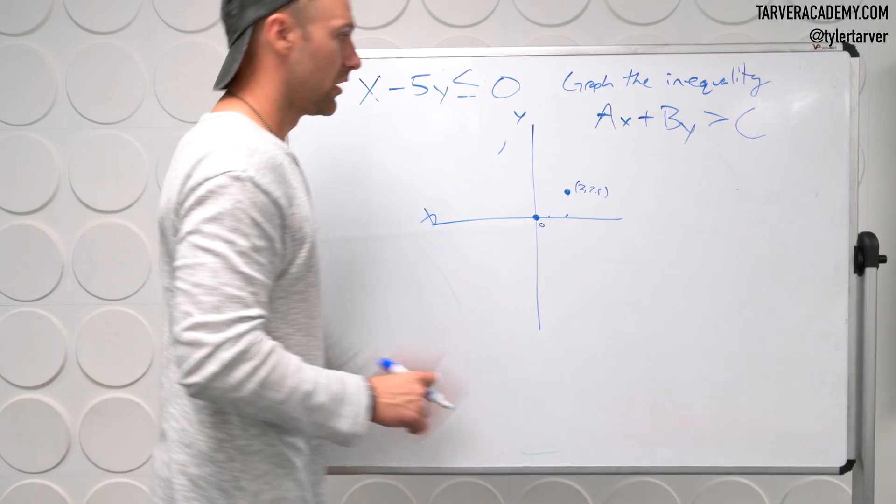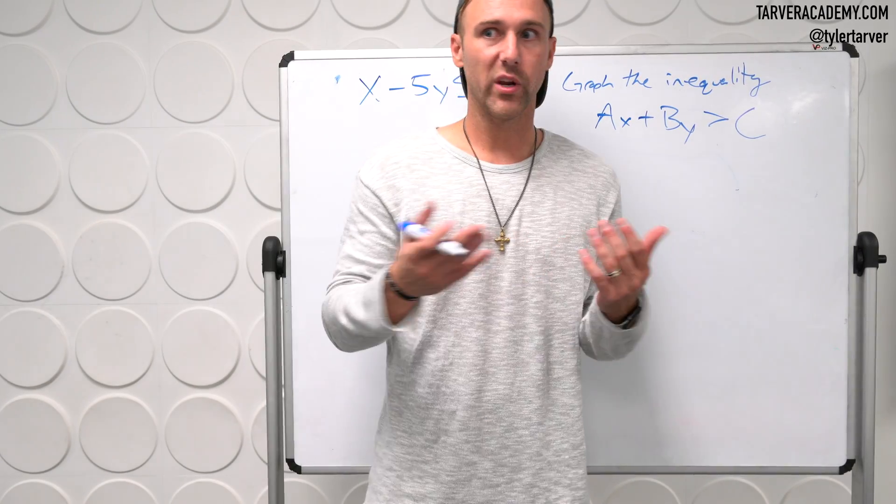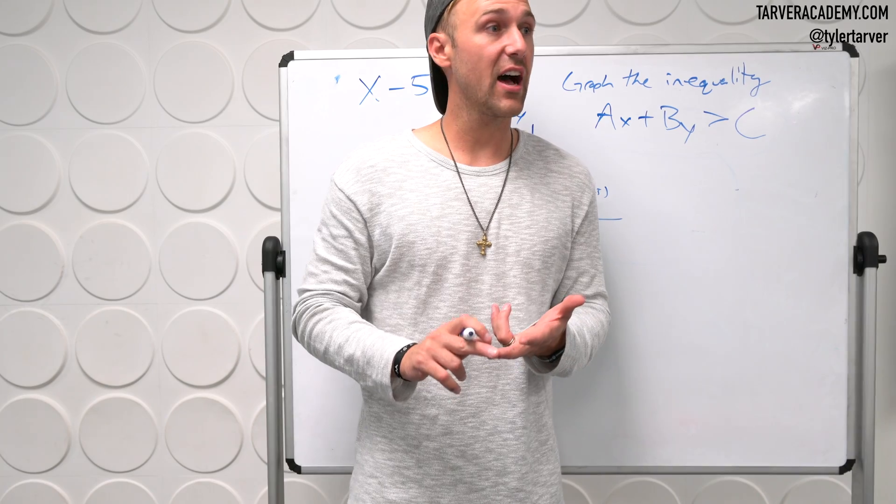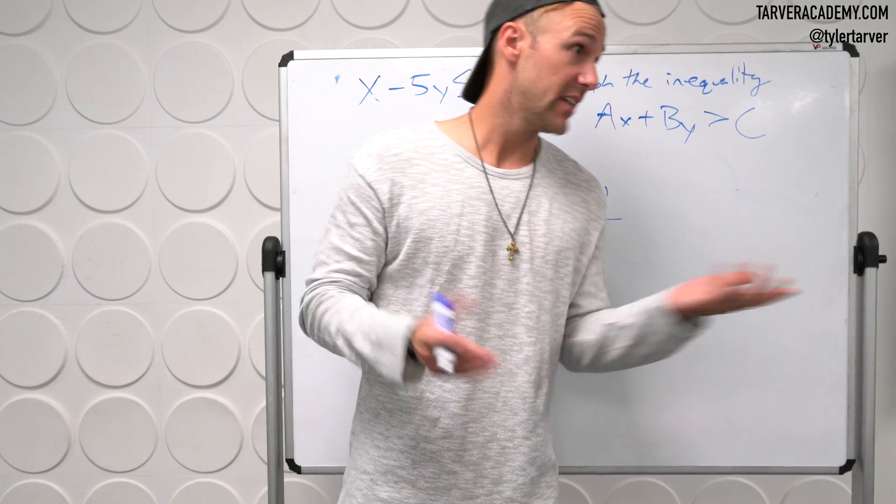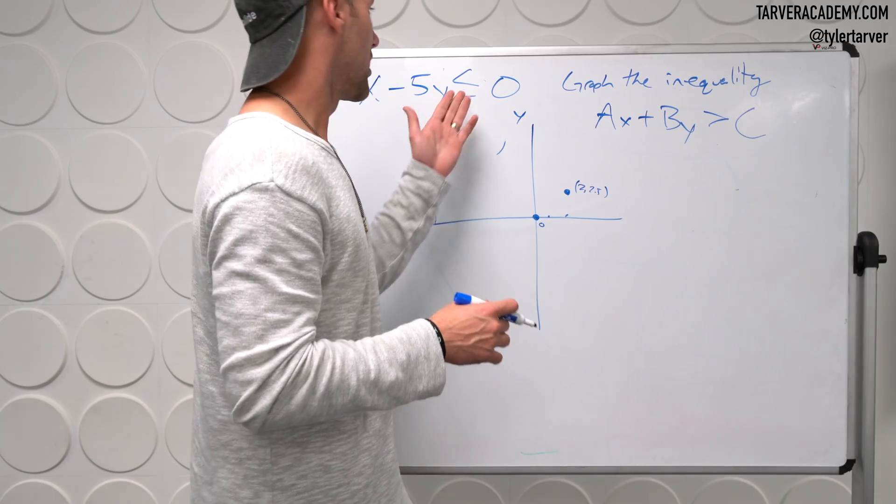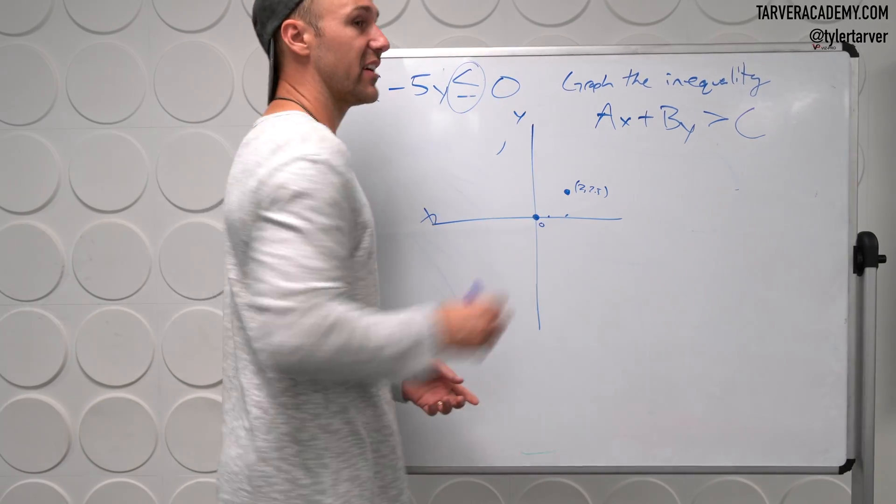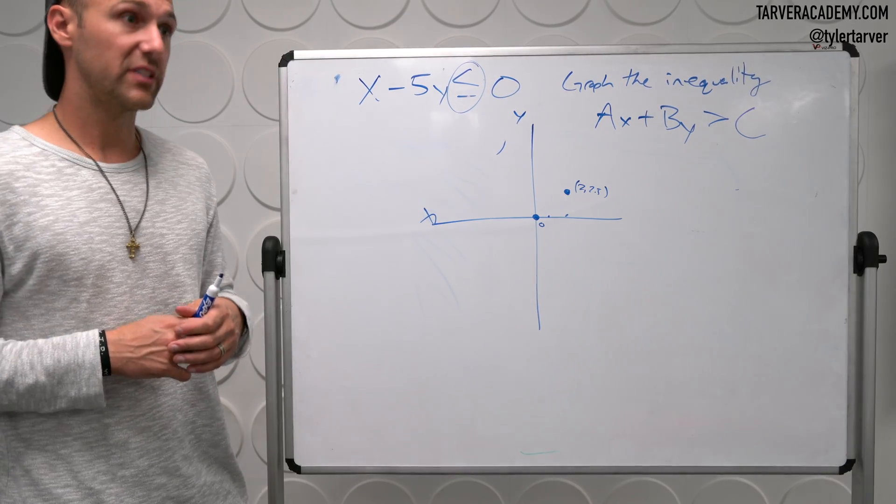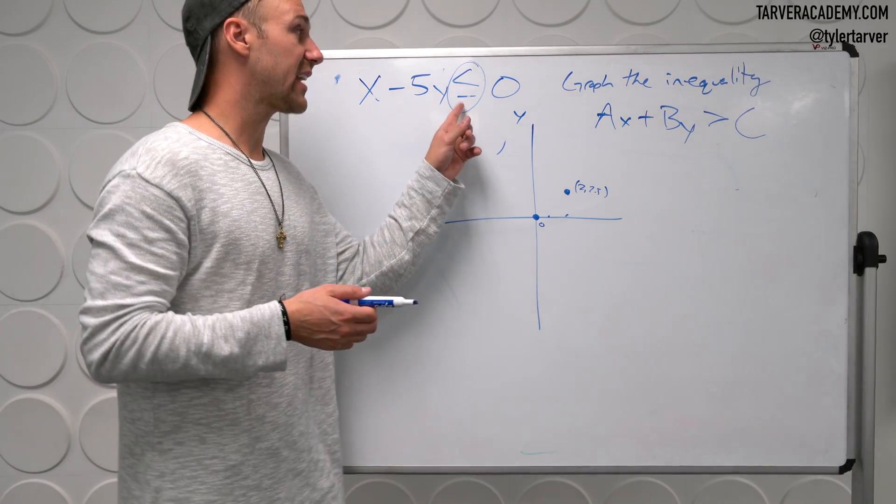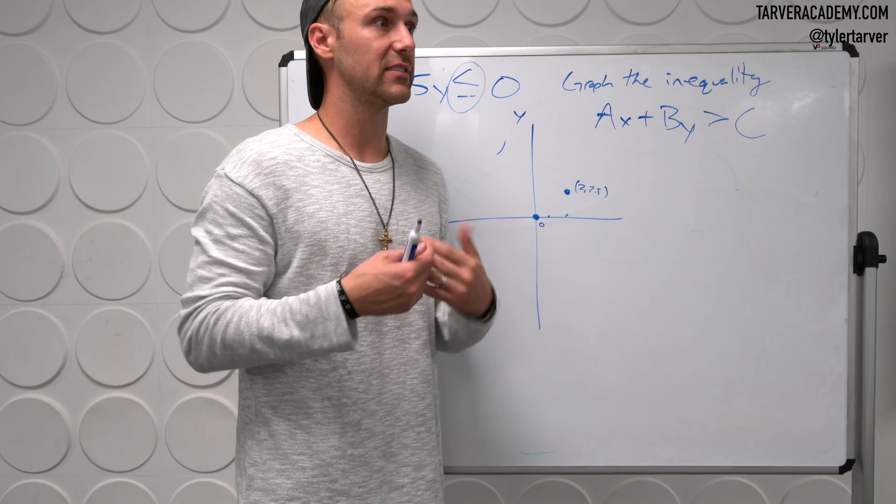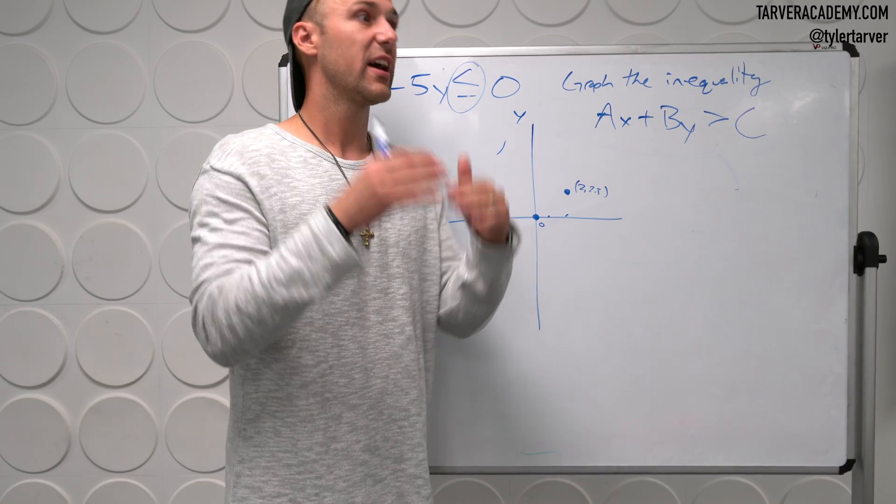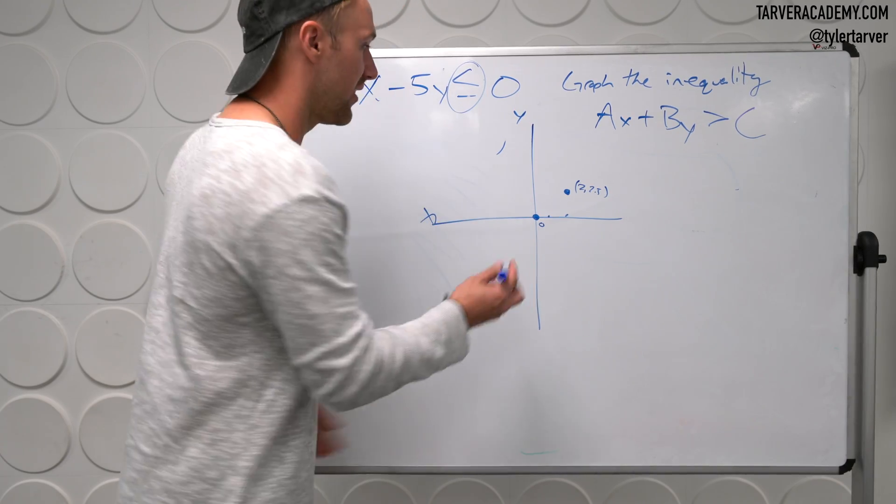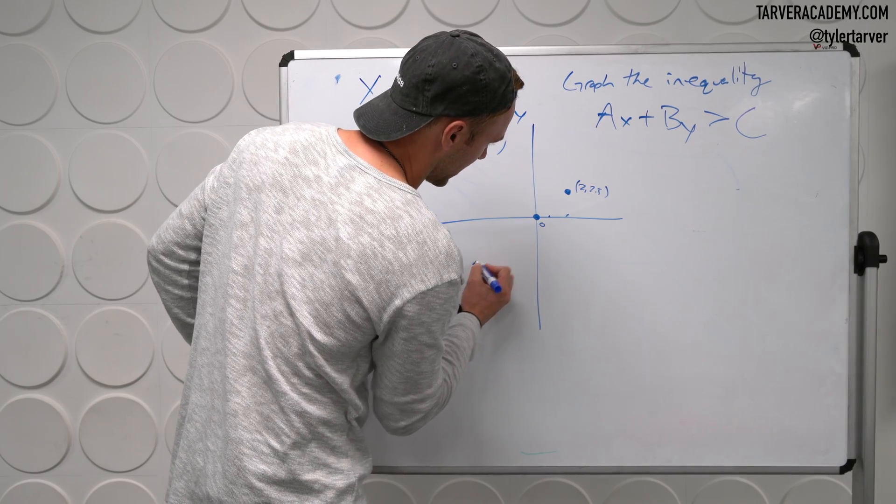But before we do that, we're about to draw our line. We need to know if it's a solid line or a dash, dotted, whatever you want to call it, dash line. This little guy right here tells me if it is or isn't solid or dashed. This one is going to be solid. Very good. Because it can be equal to it, which means the random quarter we pick can be on this line. Therefore it has to be a solid line.